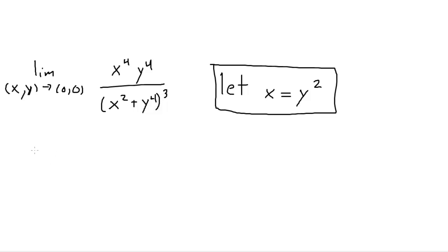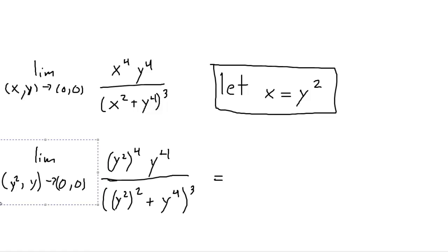So, I will take the limit of y squared, y going to zero, zero. And then I will have y squared to the fourth times y to the fourth. All of that will be over y squared squared plus y to the fourth. All that cubed. Okay? Again, we can do a little bit of algebra to simplify this expression.